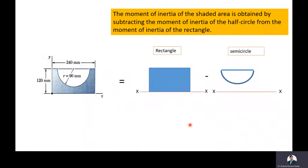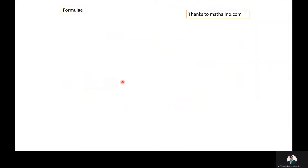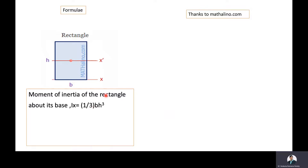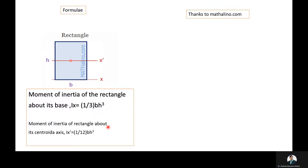Now we will revise the formulas used for finding the moment of inertia of a rectangle as well as semicircle. The moment of inertia of the rectangle about its base axis is ix = (1/3)bh³. And the moment of inertia of a rectangle about its centroidal axis is ix = (1/12)bh³. In the present problem, we are going to use the first formula, that is, moment of inertia of a rectangle about its base x-axis: ix = (1/3)bh³.